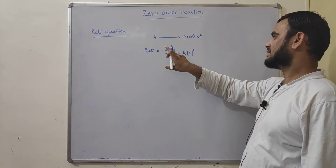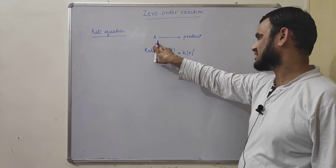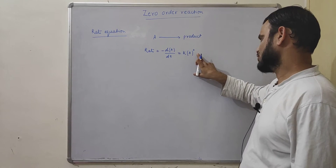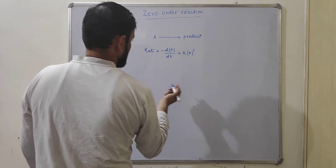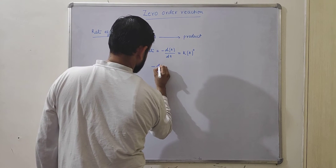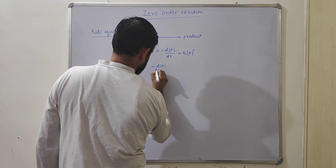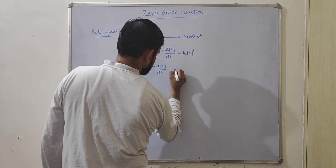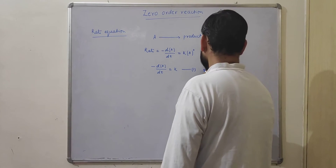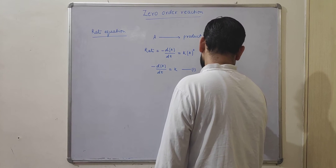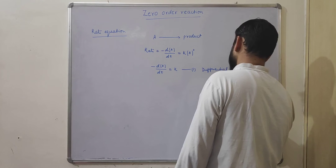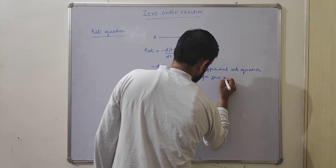Because in the zero-order reaction, the rate does not depend upon the concentration of the reactant, the power of the concentration of reactant A will be zero. So we can write this equation as −d[A]/dt = k. This equation is called the differential rate equation for zero-order reaction.